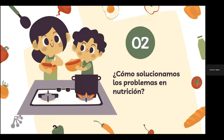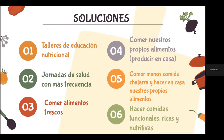¿Cómo solucionamos este problema? La participación y planificación participativa sugiere que la misma comunidad esté sujeta a resolver sus propios problemas. En los talleres realizados se identificó que para ellos es importante que existan talleres de educación nutricional, jornadas de salud con más frecuencia, comer alimentos frescos, ya que a veces los enlatados resultan más baratos, así como comer alimentos elaborados en casa, tener huertos familiares y comer menos comida chatarra. Hacer comidas funcionales ricas y nutritivas es algo que requiere la población.